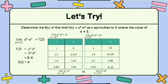The limit of X cubed minus X squared as X approaches 2 from the left is equal to the limit of X cubed minus X squared as X approaches 2 from the right. Therefore, the limit of the function X cubed minus X squared as X approaches 2 is equal to f of 2, which is 4.